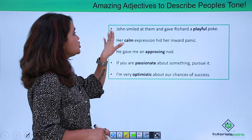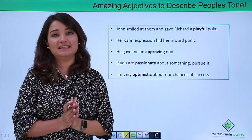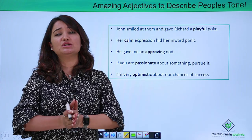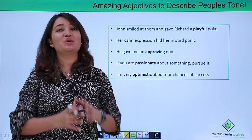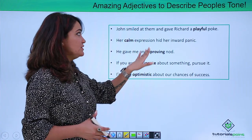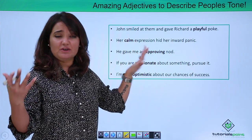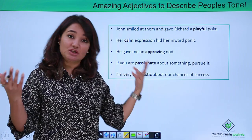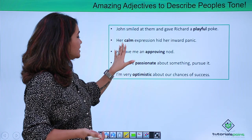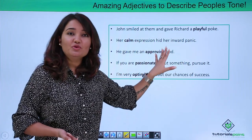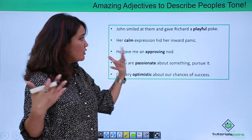"John smiled at them and gave Richard a playful poke." Playful is yet another adjective which can be used to describe the tone, behavior, feeling, expression, or conduct of a person. "Her calm expression hid her inward panic." Calm is another adjective which can describe your tone, feeling, expression, body language, or conduct. "He gave me an approving nod." Approving is another adjective to describe your tone or conduct.